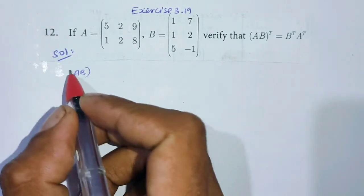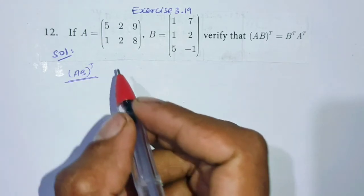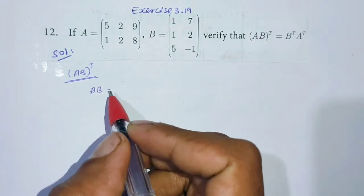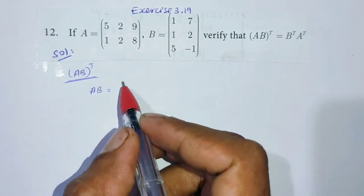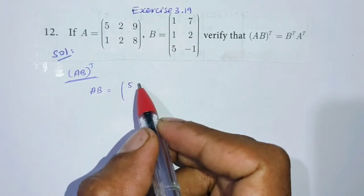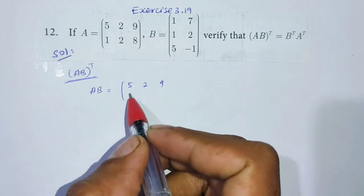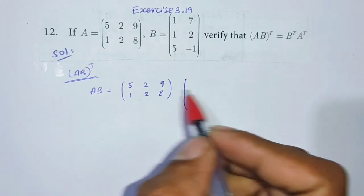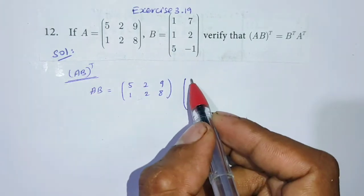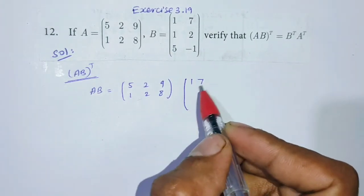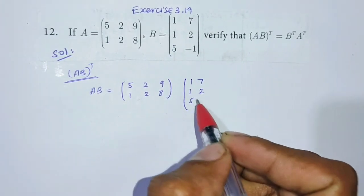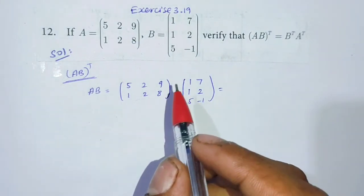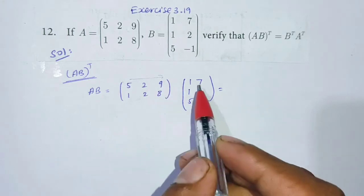First, for (AB) transpose, we will work on AB first. Substituting matrix A: [5, 2, 9; 1, 2, 8] into B, substituting the matrix, answer [1, 7, 1; 2, 5, -1]. Okay, applying matrix multiplication — first row, first column.